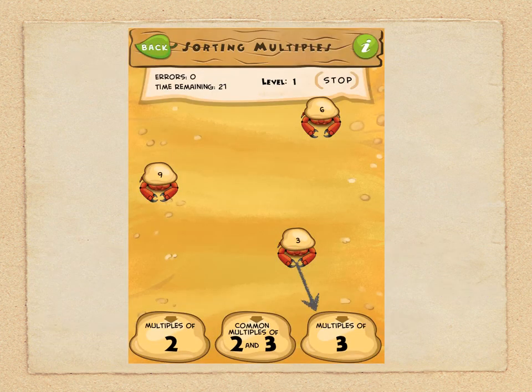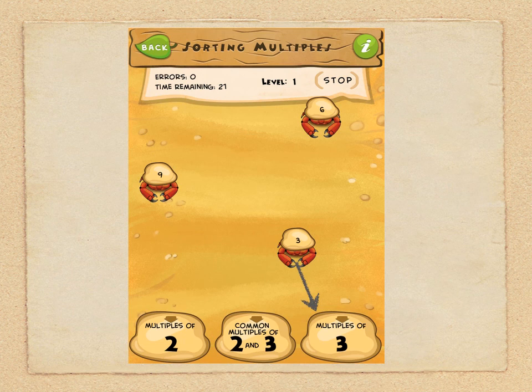Let's look at the game Sorting Multiples and make the connection between factors and multiples. What we try to do here is drag the crab to the right location at the base of the screen. We need to decide whether it belongs in multiples of two, common multiples of two and three, or multiples of three.